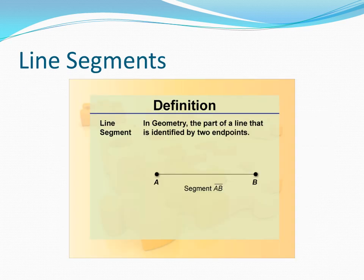Line segments. The part of a line is called a line segment. If I place two points A and B and join them, it gives line segment AB. A line segment has two end points, A and B. A line segment also has a fixed length.